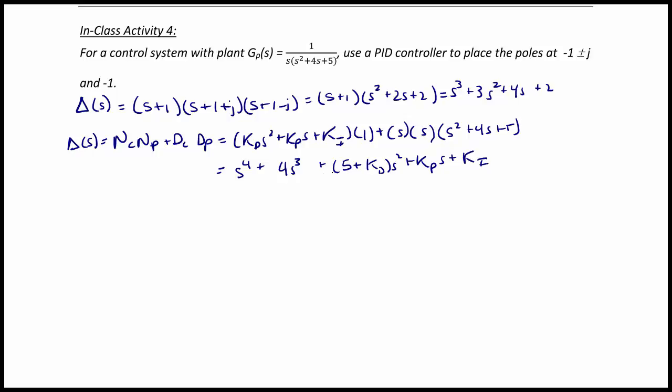Okay, so now what we're going to do is add another pole so that they have the same order. So what we're going to do here is we're going to have s to the fourth plus 4s cubed plus 5 plus kd times s squared plus kp s plus ki equals s plus a times our desired characteristic equation, s cubed plus 3s squared plus 4s plus 2.